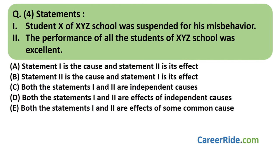Question number four. Statements: (1) Student X of XYZ school was suspended for his misbehavior. (2) The performance of all the students of XYZ school was excellent. Neither combination with 'so/therefore' makes sense, so options A and B are ruled out. The student misbehaved and was suspended — that suspension is an effect, not a cause — similar to people getting wet from rain. So option C (both independent causes) is also ruled out.